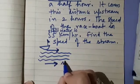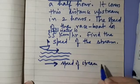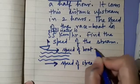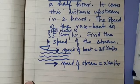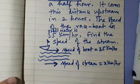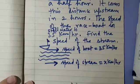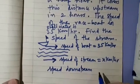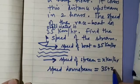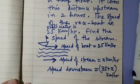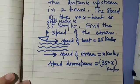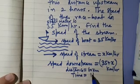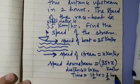We have to find the speed of the stream, so let us assume the speed of the stream equals X kilometers per hour. We are given the speed of the boat as 35 kilometers per hour in still water. So the speed downstream will be equal to 35 plus X kilometers per hour. The distance given is 60 kilometers and the time is one and a half hours, that is 3 by 2 hours.